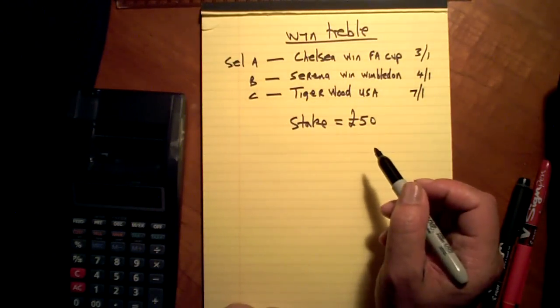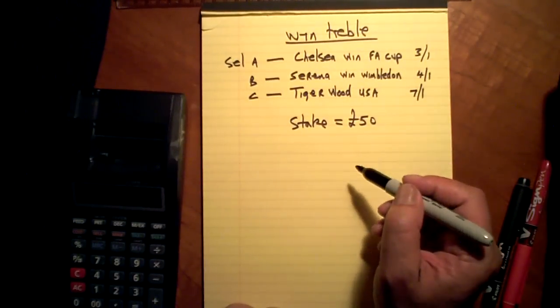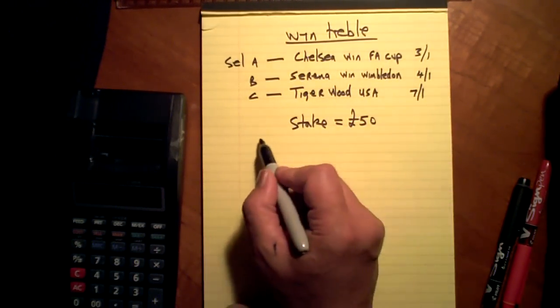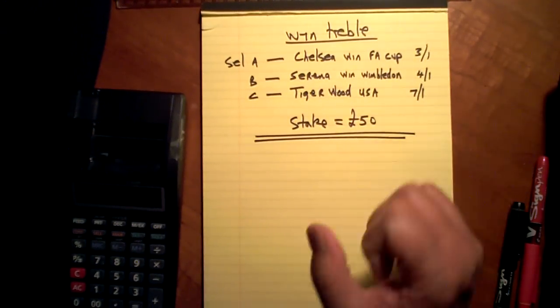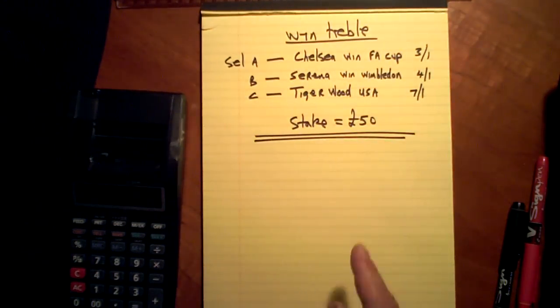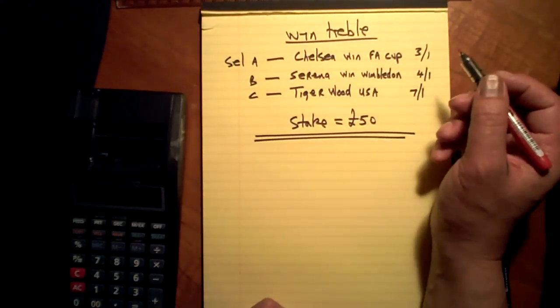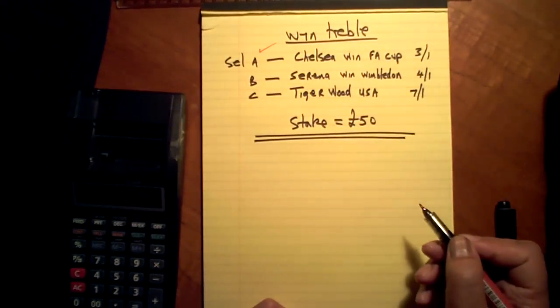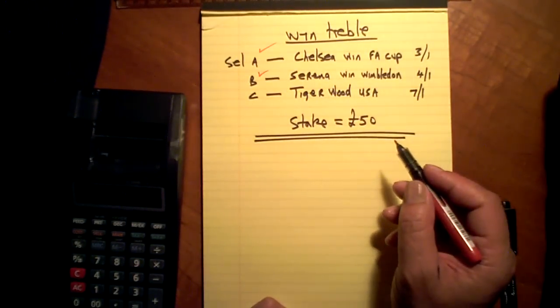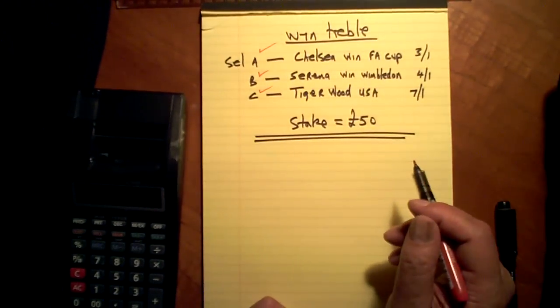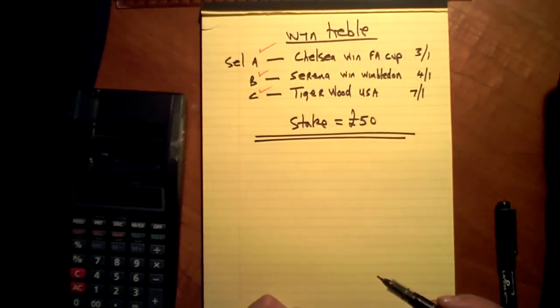Now, for £50, that win treble is possible, but not likely. One bet. Three bets to my one bet. By some miracle, I win that. Serena wins that. Tiger Woods, he wins the USA Golf Open. One bet. I get all three. I'm a winner. That £50 will now become a lot bigger.